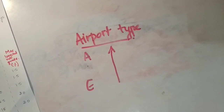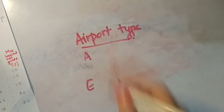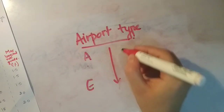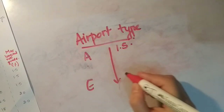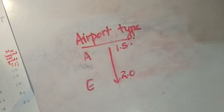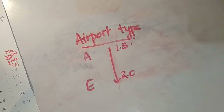Maximum longitudinal grade का trend यह है: A पर 1.5% है, और A, B, C तीनों का longitudinal grade same 1.5% आ रहा है। D और E का longitudinal grade 2.0% आता है — मतलब A से E जाने पर longitudinal grade increase हो जाता है। Summary: जब A से E जाते हैं, basic runway length decrease होती है, width of runway pavement decrease होती है, लेकिन maximum longitudinal grade increase हो जाता है।